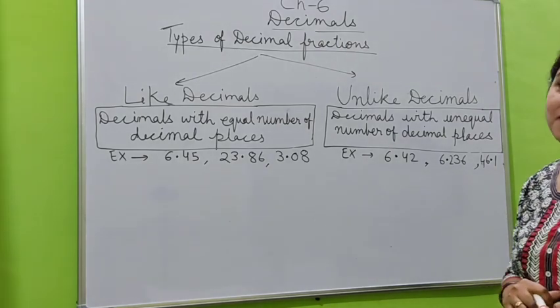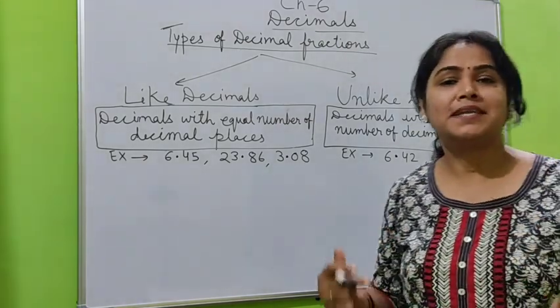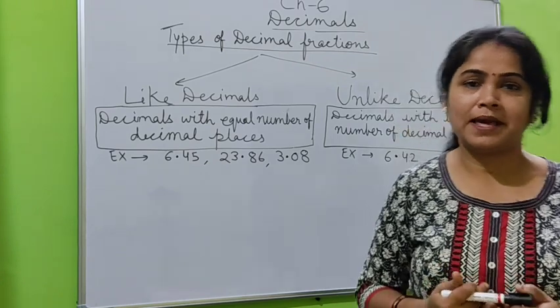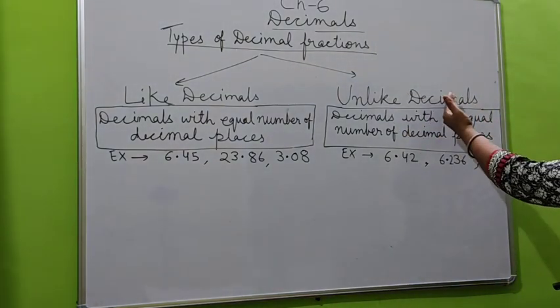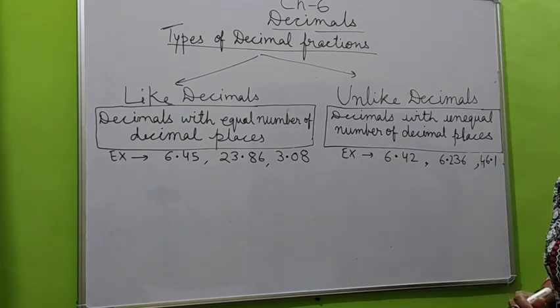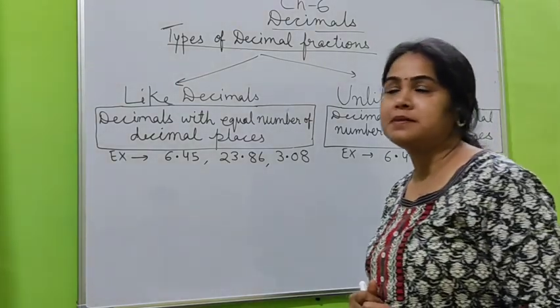What are decimal fractions? Fractions with denominators 10, 100, 1000, like that. So like decimals and unlike decimals are two types of decimals.